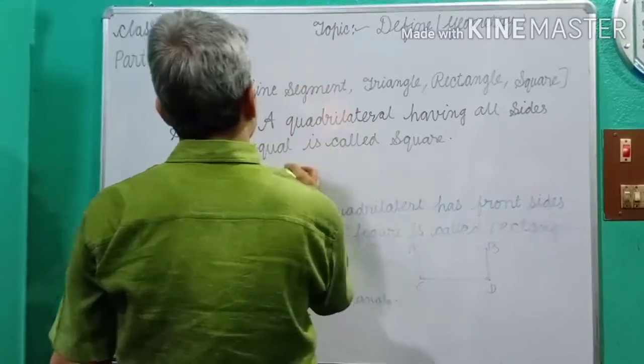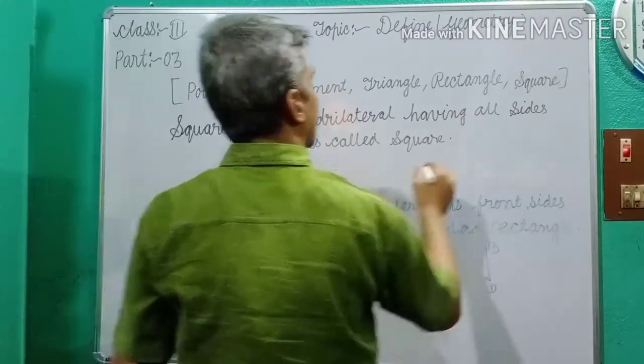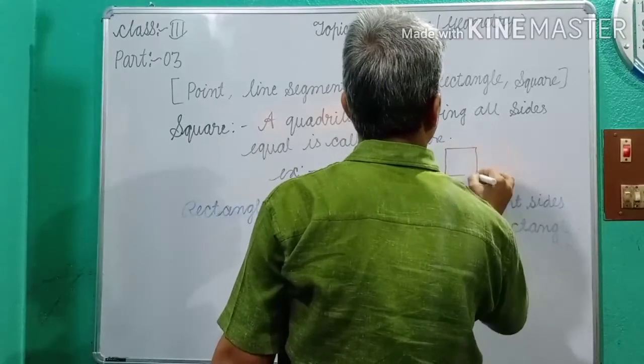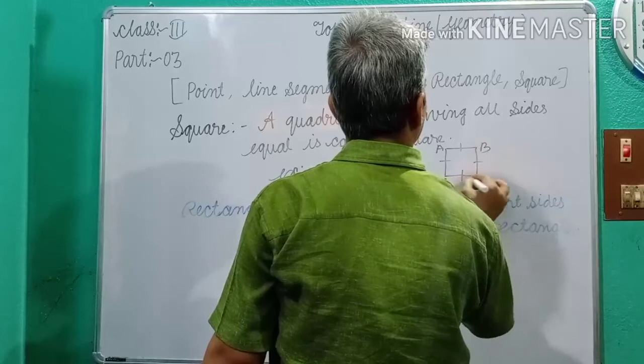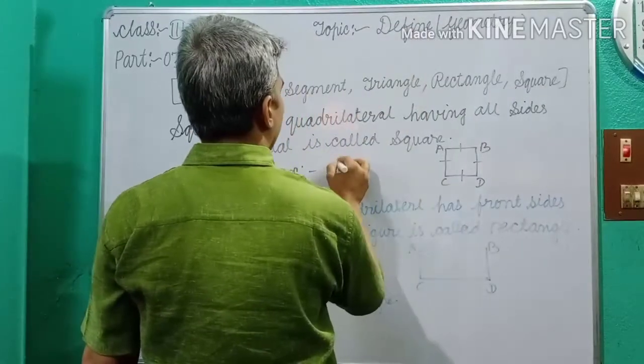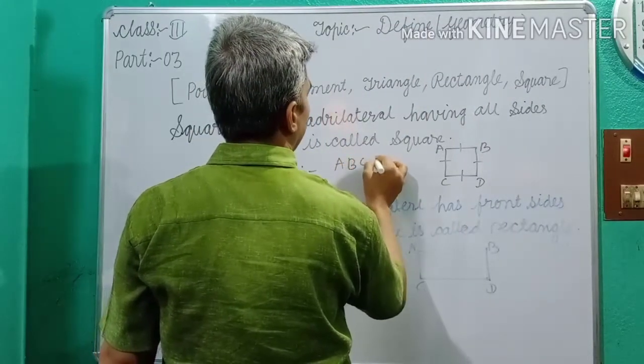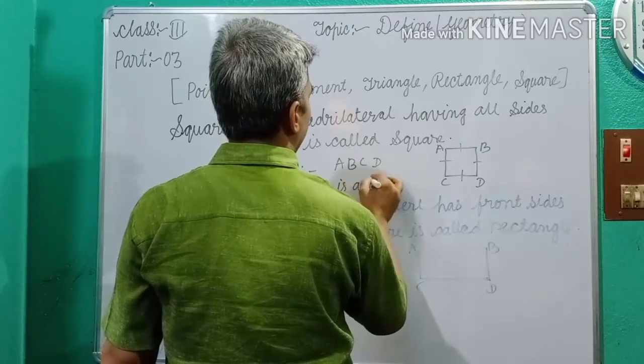For example, here A, B, C, D. A, B, C, D is a square.